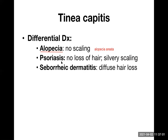Psoriasis is another differential diagnosis — a chronic skin disorder where the life cycle of keratinocytes is greatly reduced. In psoriasis there is no hair loss typically, but silver scales are present; in very severe involvement hair loss may occur. The hallmark is the silver-colored scale. Seborrheic dermatitis is a greasy, oily type of involvement with diffuse hair loss, and apart from the scalp, even the back of the neck, forehead, and nasal area may be affected.